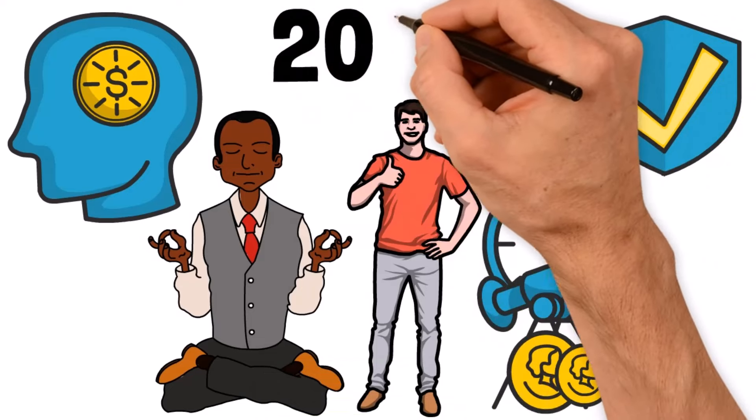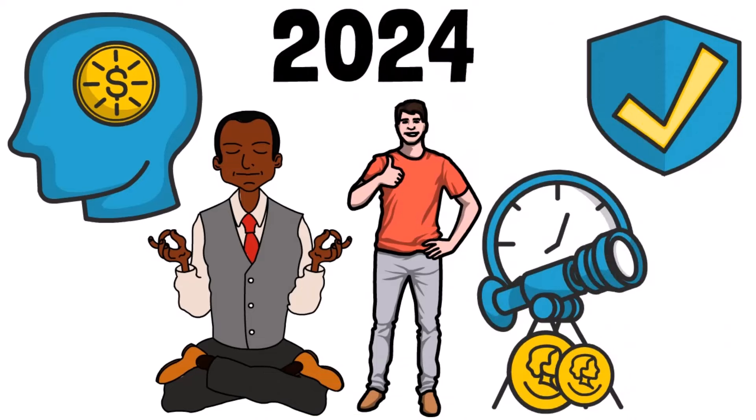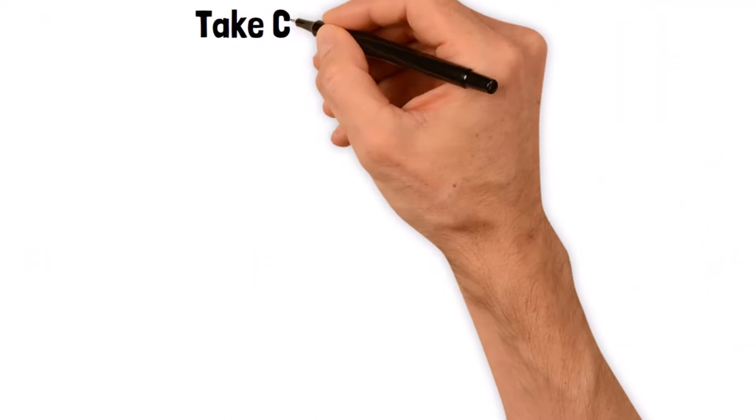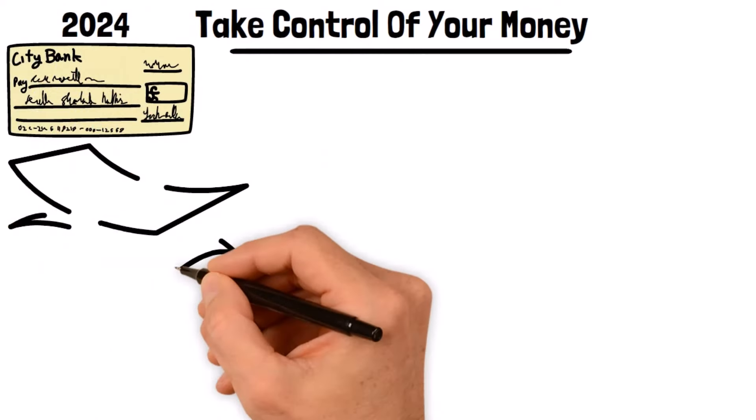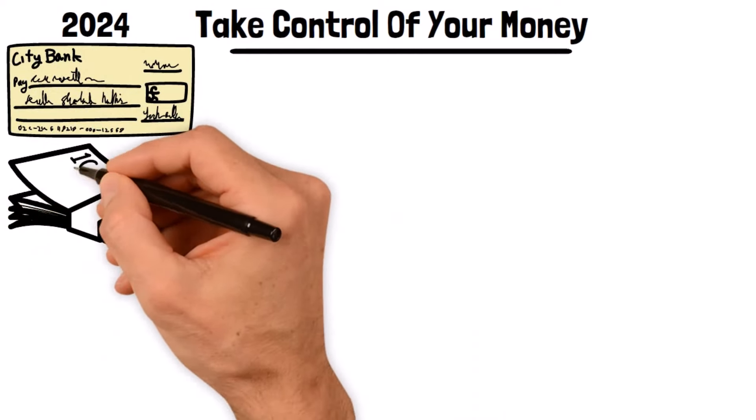So I suggest you start planning this lifestyle change because 2024 is a few days away. Take control of your money. Do you want to stop living paycheck to paycheck in 2024? Then you have to take control of your money.